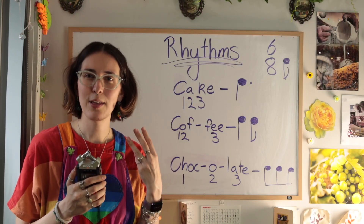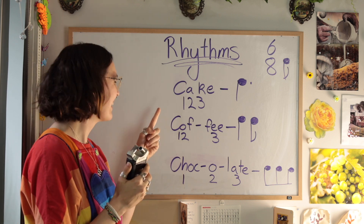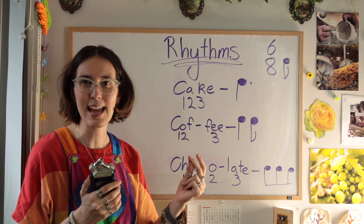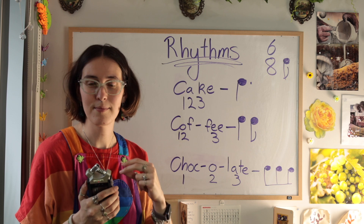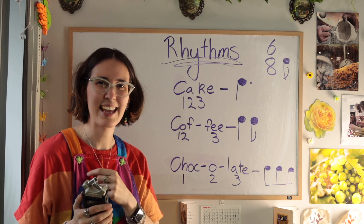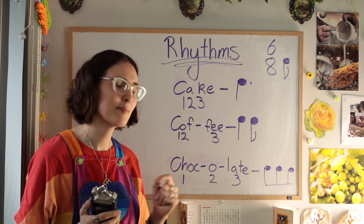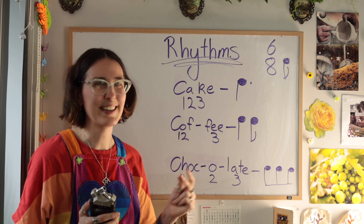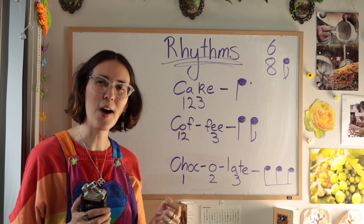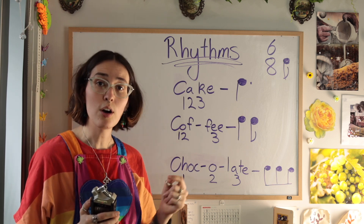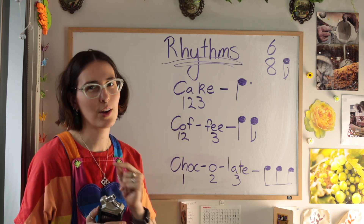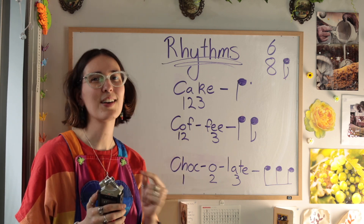To write our little folk tune we need three ingredients: cake, coffee and chocolate. We click a beat here. Our cake is going to take up a two and a one, giving us a long-short. Coffee, coffee, coffee — each syllable takes up one equal click. Chocolate is our last one, and we split the syllables up, each to take up one click.